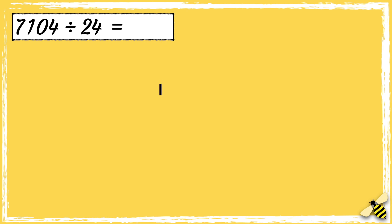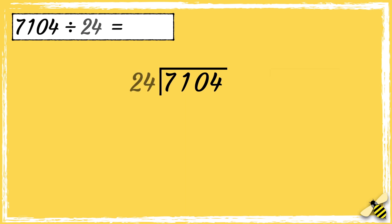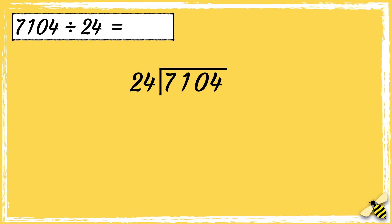First we need to draw our bus stop. We put the dividend inside the bus stop and the divisor next to it. Now we know that 24 does not go into 7, so we need to look at how many 24s go into 71.